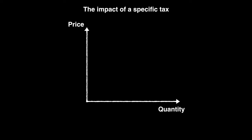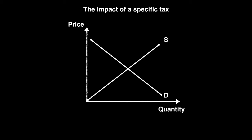We'll take a look at the impact of a specific tax for products that have elastic and inelastic demand. With this market in equilibrium, we establish our starting point for analysis. Suppose the government introduces a specific tax, increasing the cost of production for firms. As they are paying the same tax for each unit sold, the new supply curve is parallel to the initial supply curve.